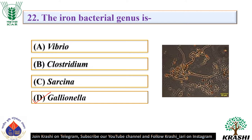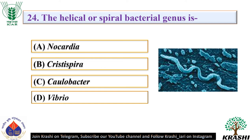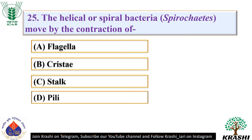Question number 23: The non-flagellated bacterial genus is. The correct answer is option A — Bacillus. Question number 24: The helical or spiral bacterial genus is — it is Cristospira. Question number 25: The helical or spiral bacteria or spirochetes move by the contraction of — they move by the contraction of christi.